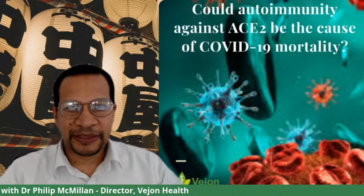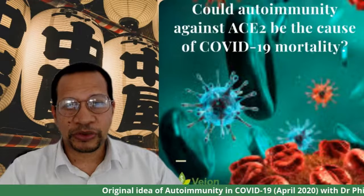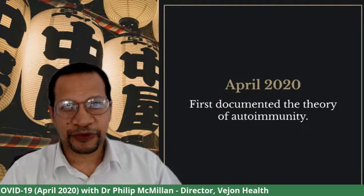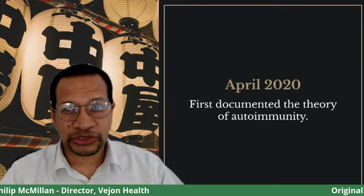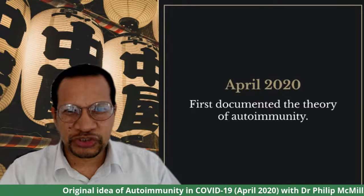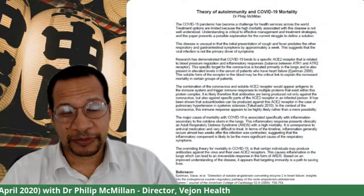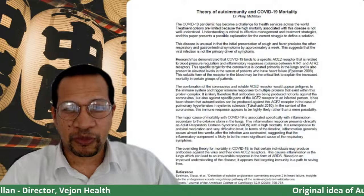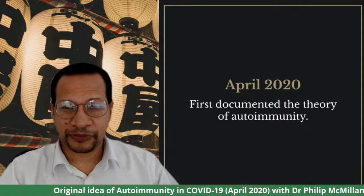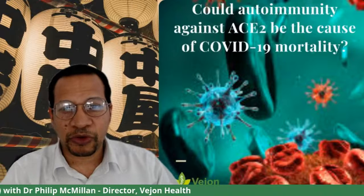Here we have a picture of a post that I did. Guess when I did this post? Could autoimmunity against ACE2 be the cause of COVID-19 mortality? That was done in April 2020 — the first documentation of the theory of autoimmunity. I'm highlighting this because one of the strange things about science is that they tend not to give credit to these first thoughts, and I'm making sure that no one forgets that I thought about this at that time.